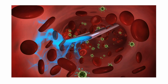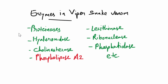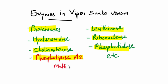When a viper snake bites, venom enters into the bloodstream. Enzymes present in viper snake venom are proteinases, hyaluronidase, polyesterase, lecithinase, ribonuclease, phosphatidase, and most importantly phospholipase A2. Phospholipase A2 enzymes are multi-toxic enzymes which can act locally as well as systemically to induce a wide range of pathophysiological alterations in the victim.